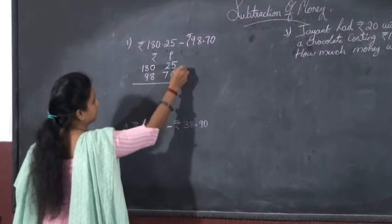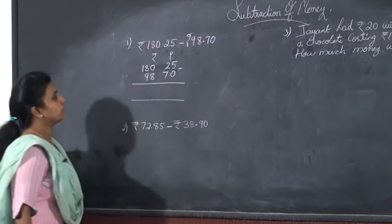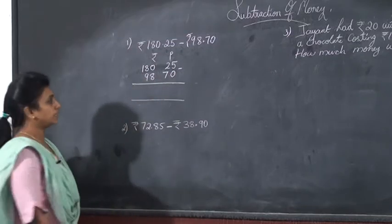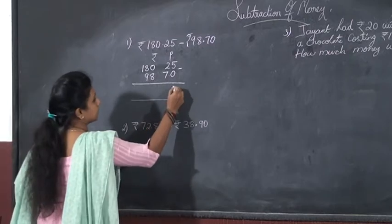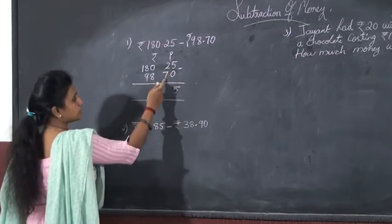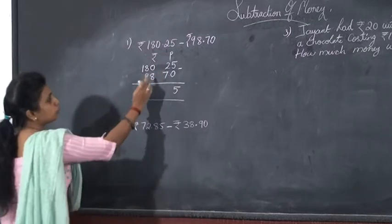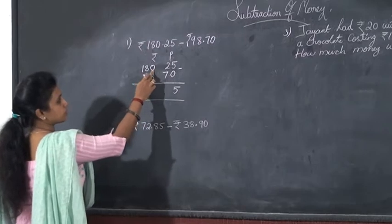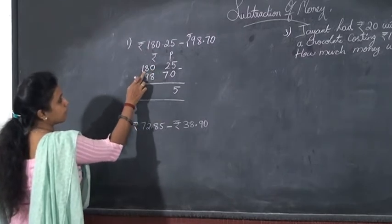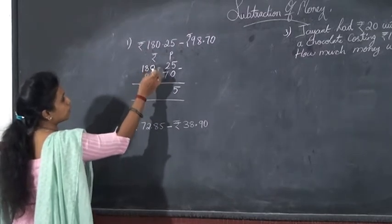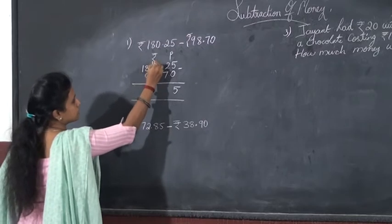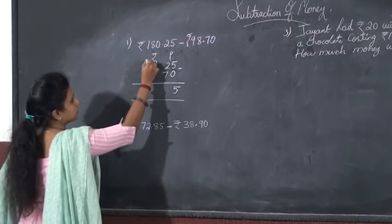Then, subtract here. Okay, so what is 5 minus 0? It is 5, then 2 minus 7. Here, you cannot subtract 7 from 2, so you need to take borrowing. Now, you want to move to the next number and take more 1, give 1 to this number. It gives 10 and this makes 7.